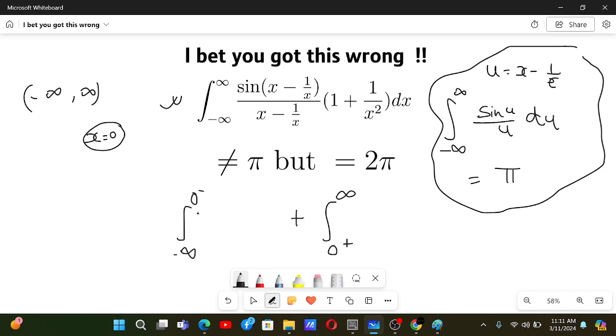So over here also, sin of x minus 1 by x by x minus 1 by x times 1 plus 1 by x square. And over here also, sin of x minus 1 by x by x plus 1 by x, and then 1 plus 1 by x square dx.